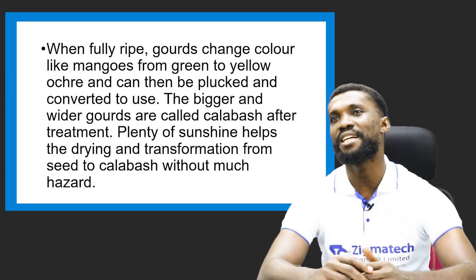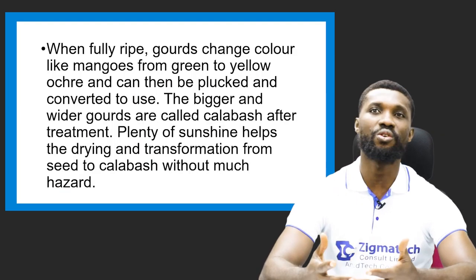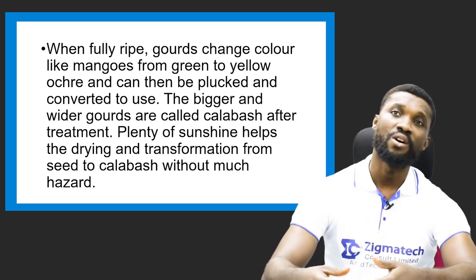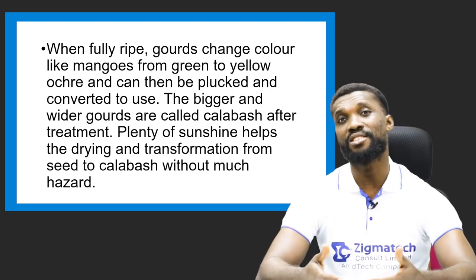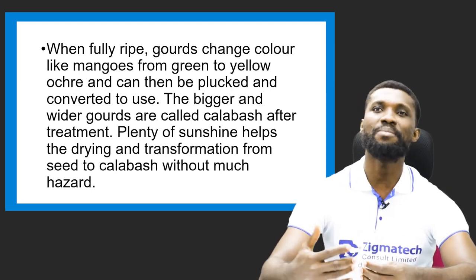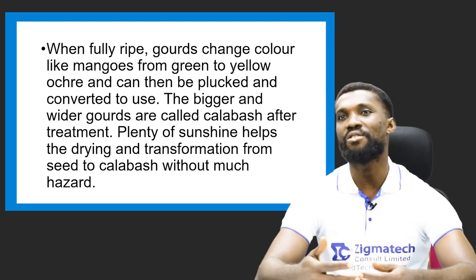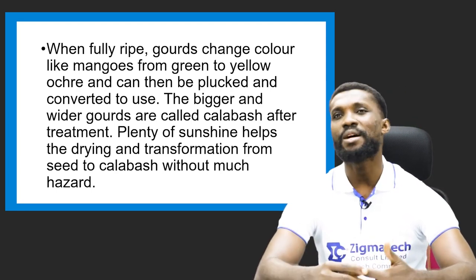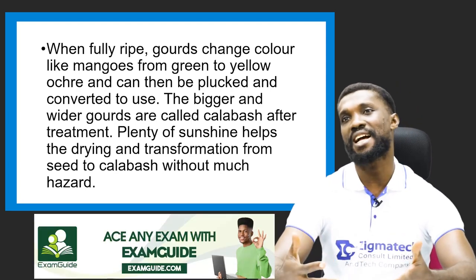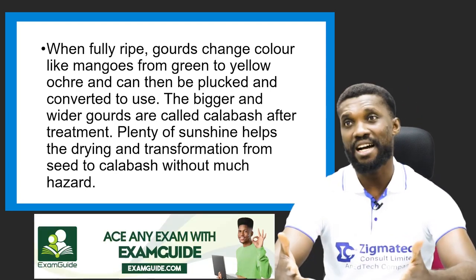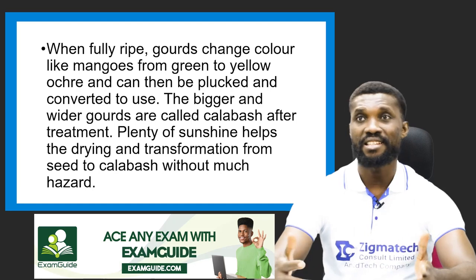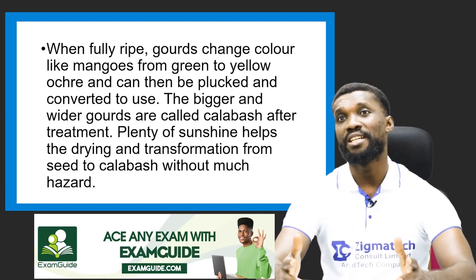When fully ripe, the gourd changes color like a mango — from green to yellow, this time to yellow ochre. Then it's picked up and converted into something useful. The bigger the gourd, the bigger the calabash. The bigger gourds are usually called the calabash.